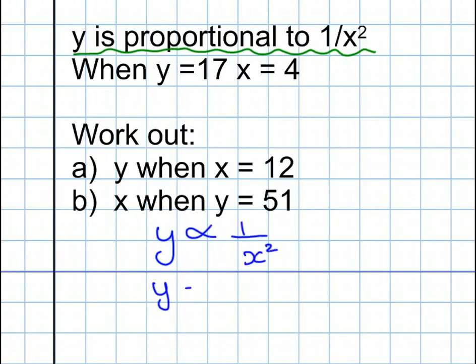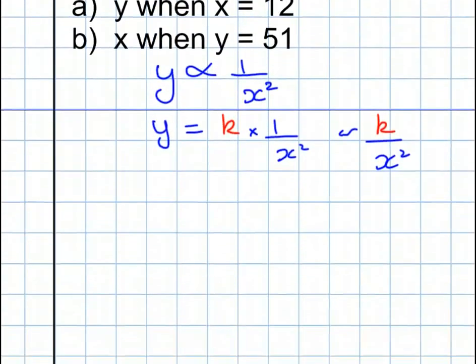We write our equation. Y is equal to K times 1 over X squared. Or, better still, K over X squared. Now, we'll go back to the information they gave us. When Y is 17, X is 4.